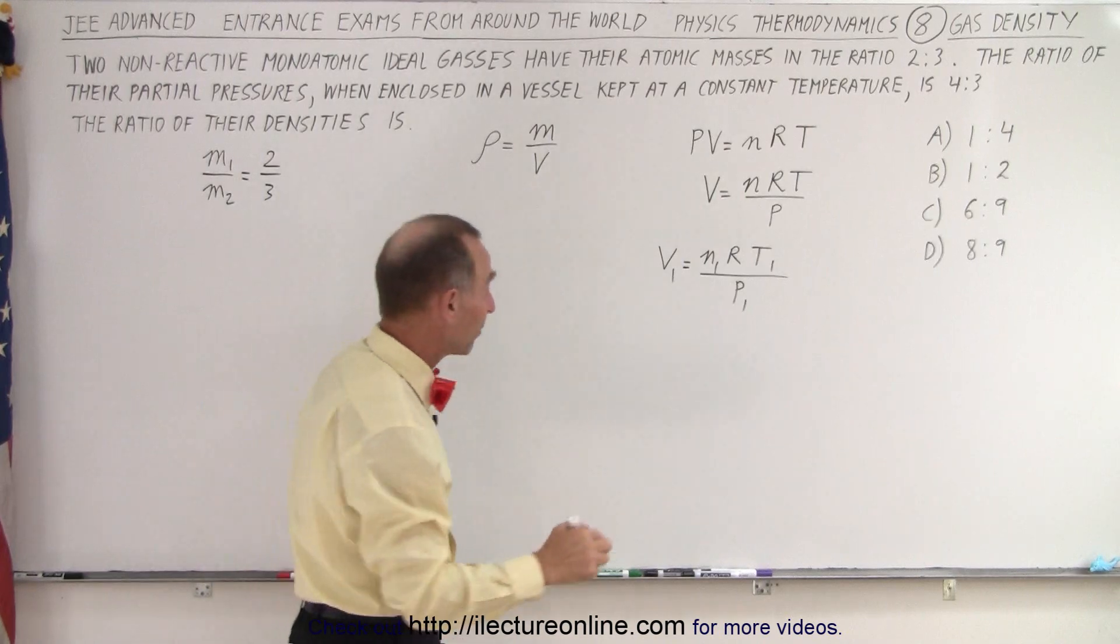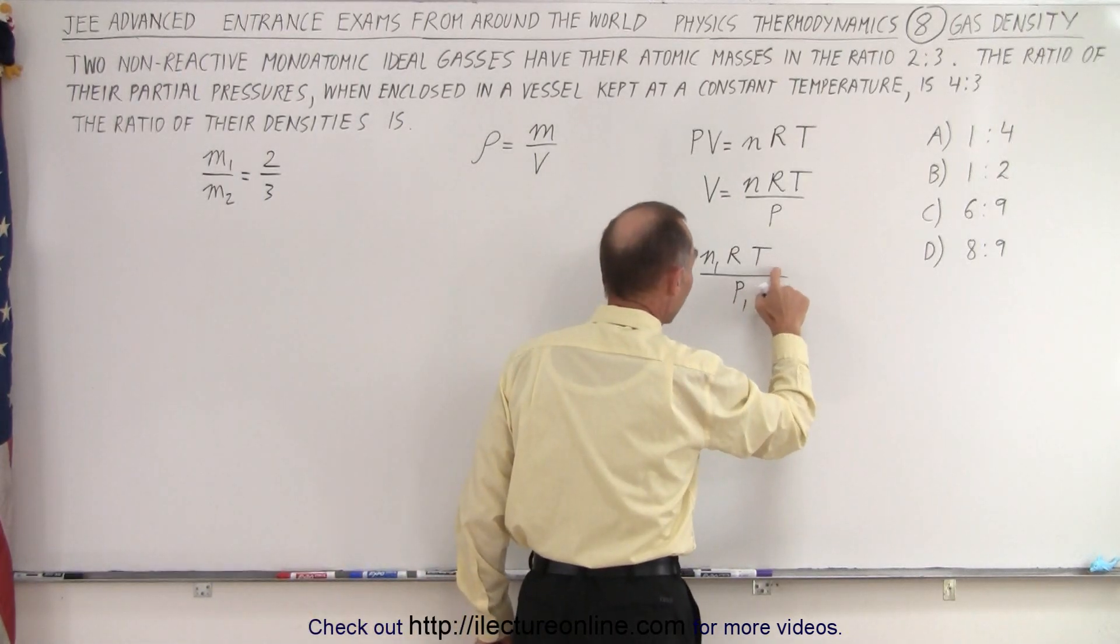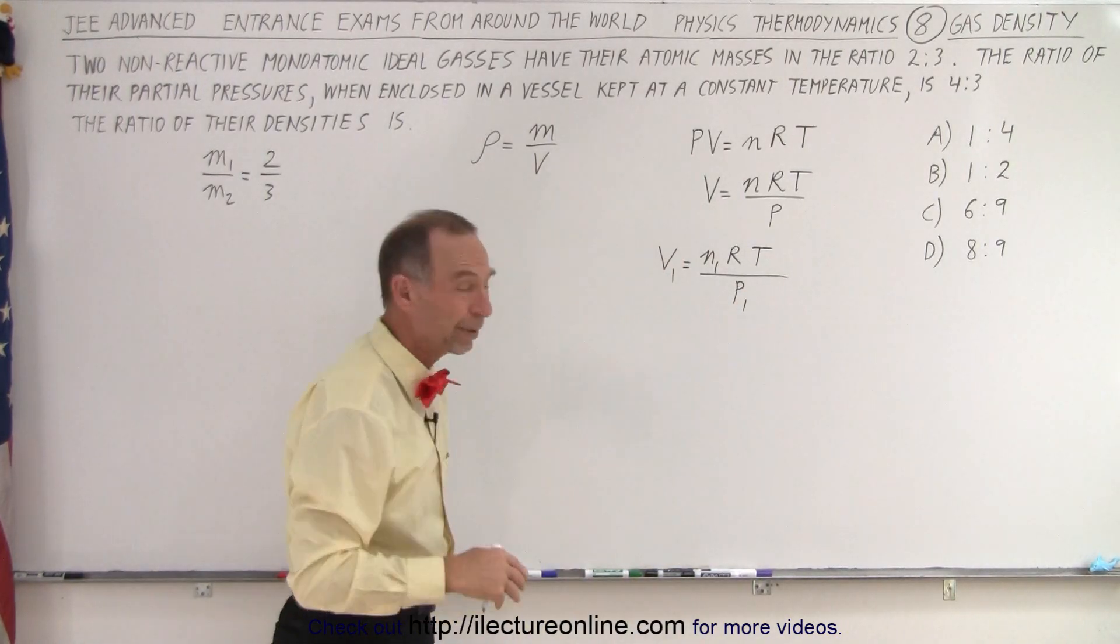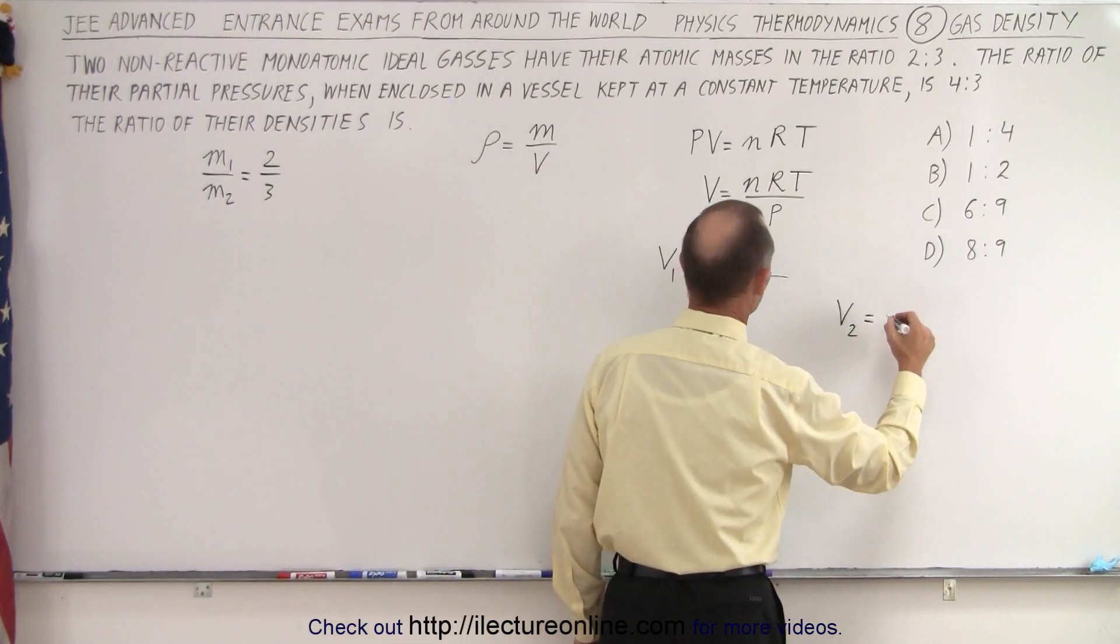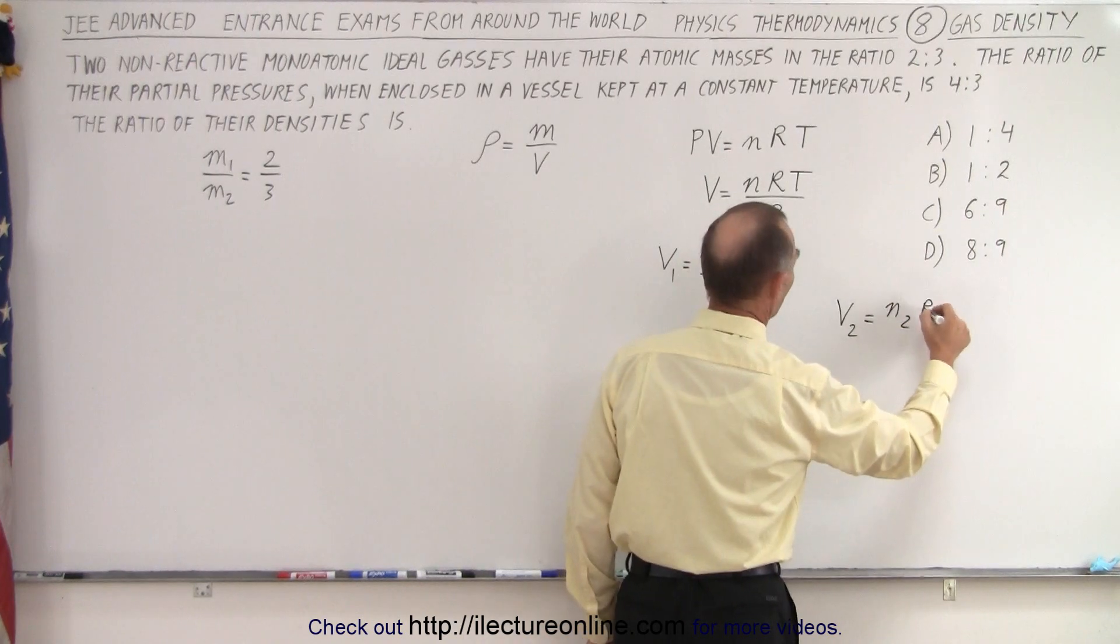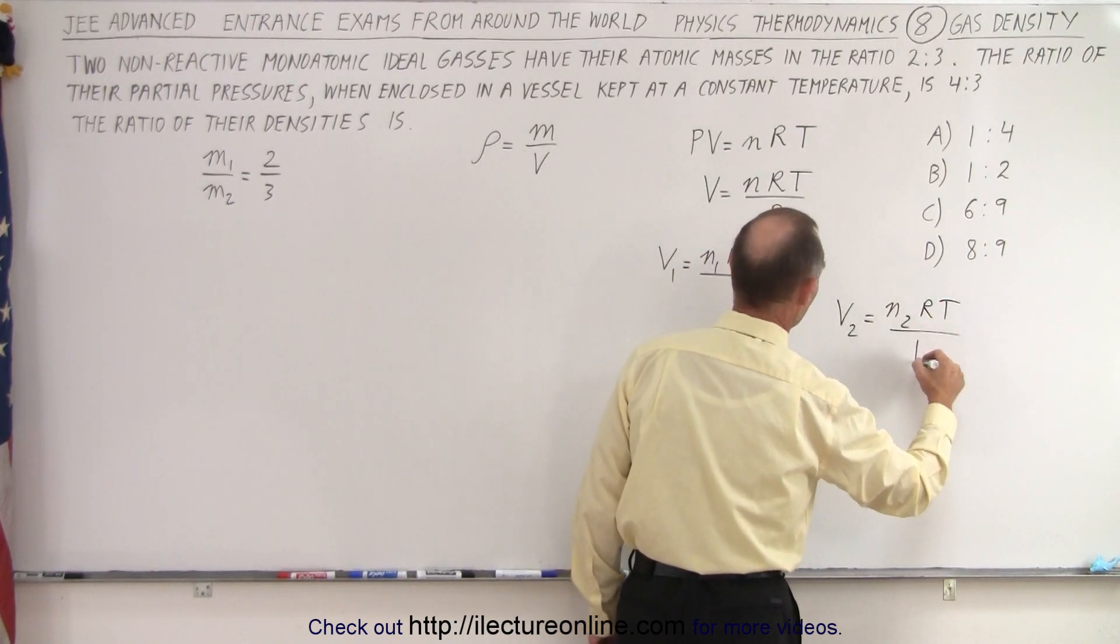And so both gases should be at the same temperature. So we don't need to subdivide that. We could simply say T because it will be the same for both gases. And we could also say that V2 is equal to n2 RT divided by P2.